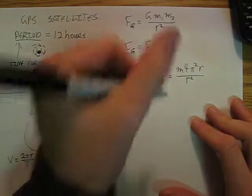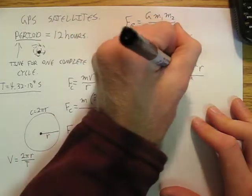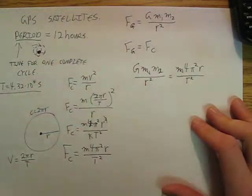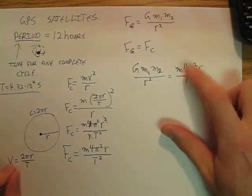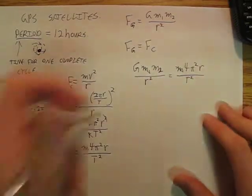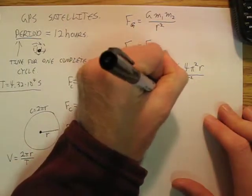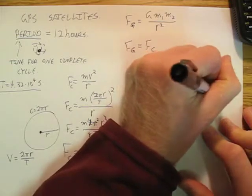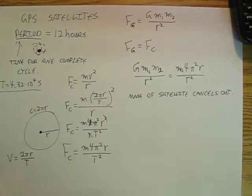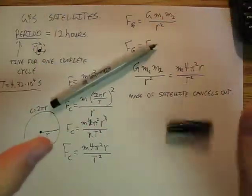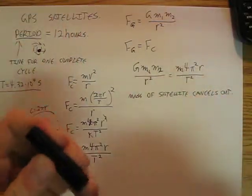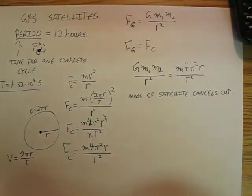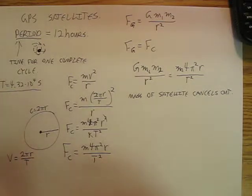We can set these two equations equal to each other, and we have a little cancellation. We cancel some masses — specifically the mass of the satellite cancels out. This brings us back to the classic question: which object falls toward earth faster, the heavier or the lighter one? The answer is neither — all objects accelerate toward the center of the earth at the same rate.